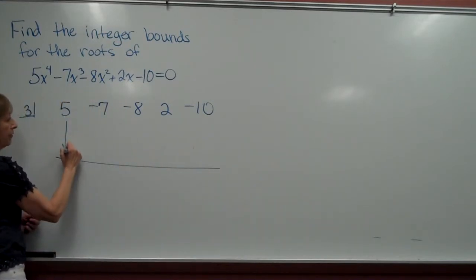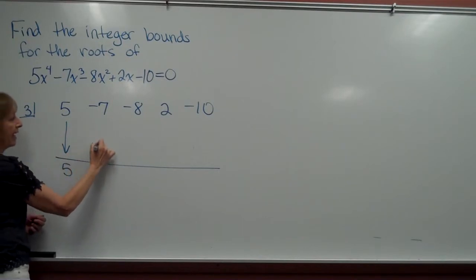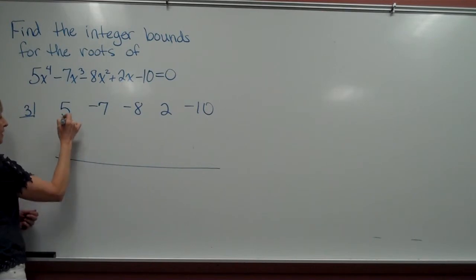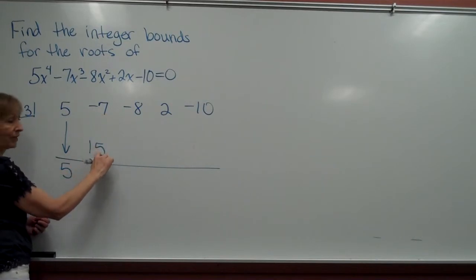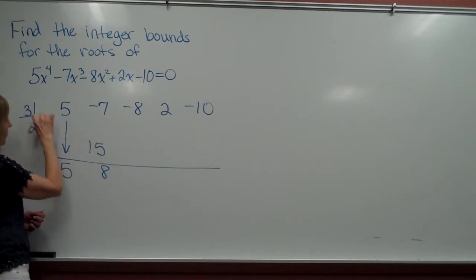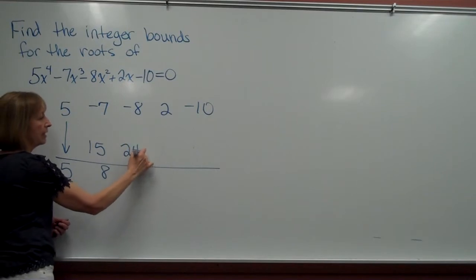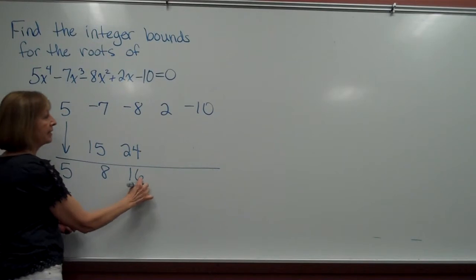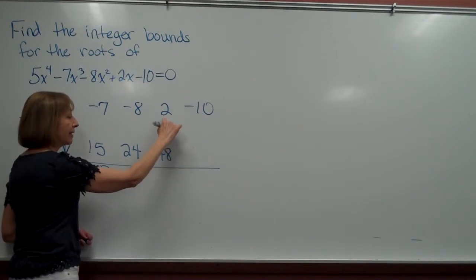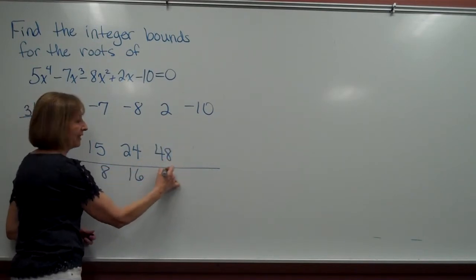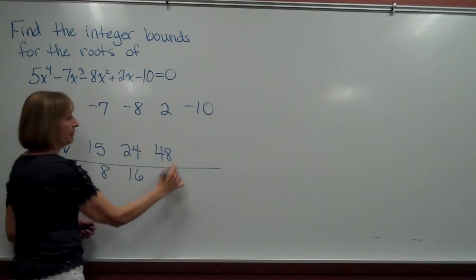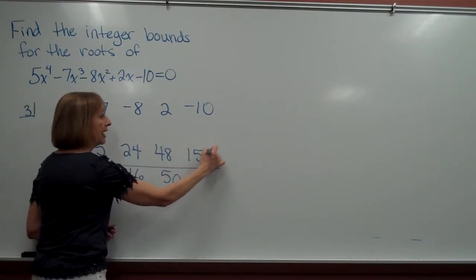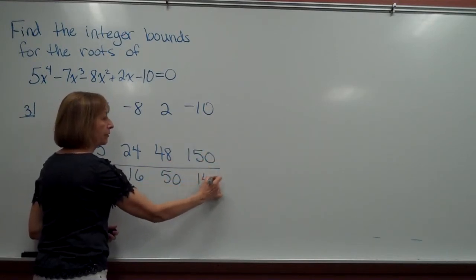So now bring down the first number, 5. 3 times 5 is 15. Negative 7 plus 15 is 8. 3 times 8 is 24. Negative 8 plus 24 is 16. 3 times 16 is 48. Positive 2 plus 48 is 50. And then 3 times 50 is 150. And negative 10 plus 150 is 140.